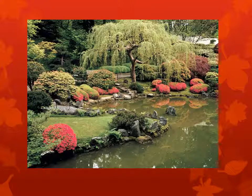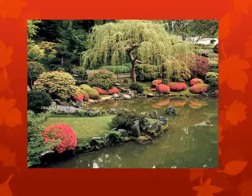Here is an example of both color and form in a landscape. Variety is achieved by the weeping form of the tree, whereas unity and simplicity are achieved by the mounding, rounded habits of the shrubs. Emphasis is created with the red accent, whereas simplicity and unity are created with the green matrix color.